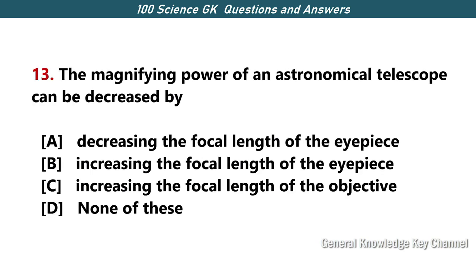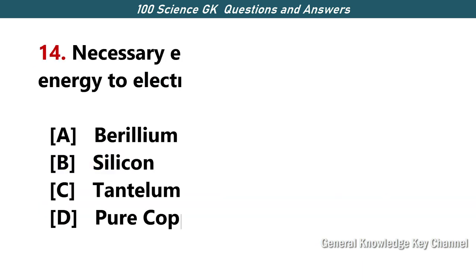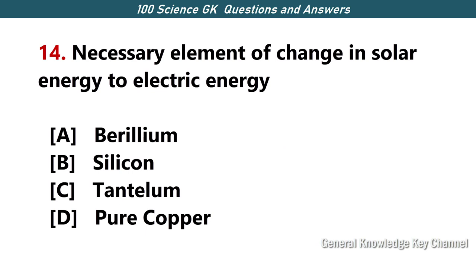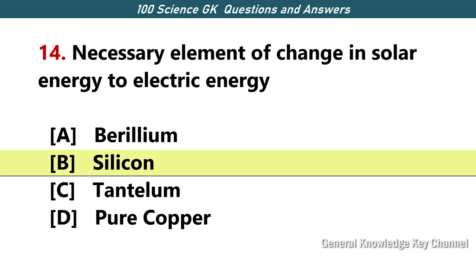The magnifying power of an astronomical telescope can be decreased by — Answer B — increasing the focal length of the eyepiece. The necessary element for the conversion of solar energy to electric energy — Answer B — silicon.